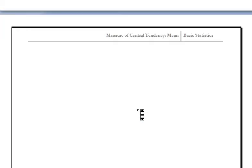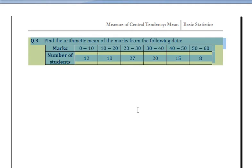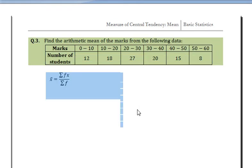Example 3: Find the arithmetic mean of the marks from the following data. Here the marks are in class form (grouped data): 0 to 10 has 12 students, 10 to 20 has 18 students, and so on. We can solve this example by all three formulas. First, using x-bar equals summation fx upon summation f.